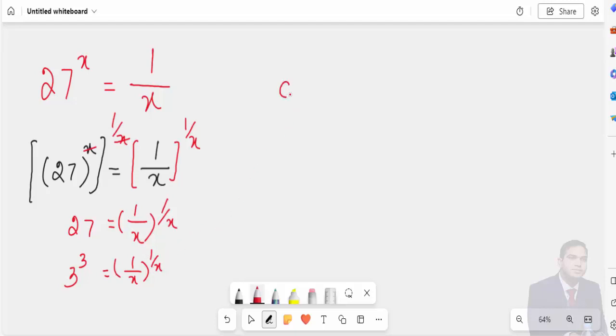If a to the power a is equal to b to the power b, then this implies that a is equal to b. Here in this case, a is 3 and the power is 3, clear.